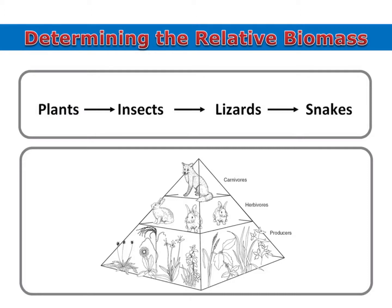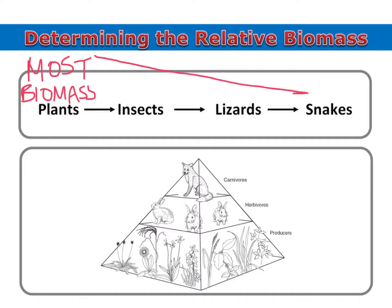It's very important that you can determine the relative amount of biomass between the trophic levels in an ecosystem. Producers have the greatest biomass because they are the foundation of the food chain, so they have the most, and that decreases with each trophic level. The apex predator population will have the least amount of biomass, and each trophic level just gets less and less as you go.